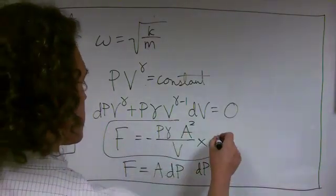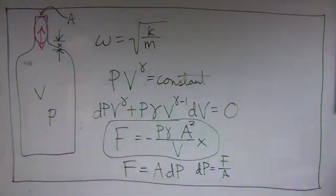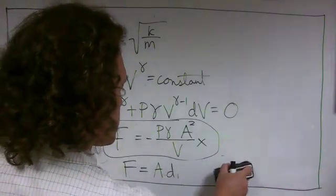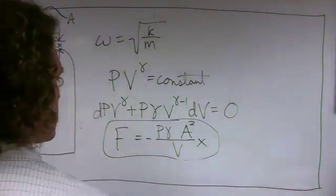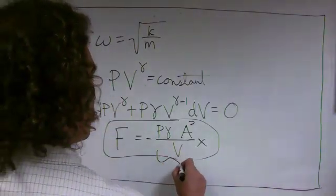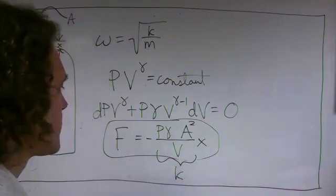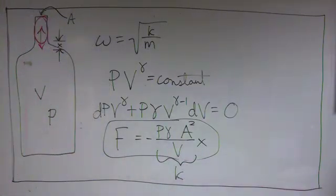This equation now has the form of Hooke's Law for a spring, where this part right here is the spring constant. So pγa²/V - that's the spring constant of the air in the main part of the bottle.